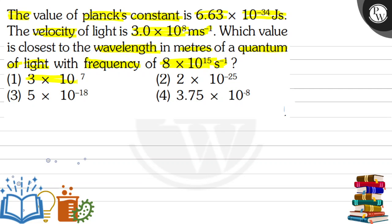We have four options here. Option 1: 3 multiplied by 10 to the power 7. Option 2: 2 multiplied by 10 to the power minus 25. Option 3: 5 multiplied by 10 to the power minus 18. And option 4: 3.75 multiplied by 10 to the power minus 8.